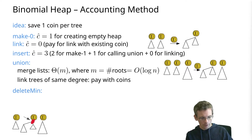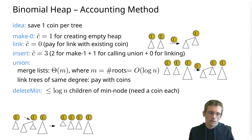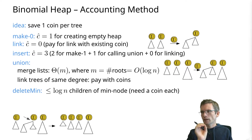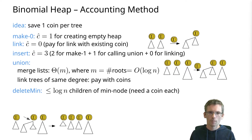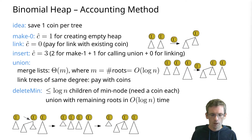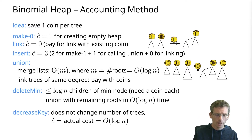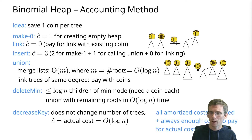For delete-min: we delete a node, leaving the original list and the list of children of that node, which we then merge and call union. The issue is that the children of the minimum don't have coins yet, so we must give each of them a coin — but there are at most O(log n) children, so we spend at most O(log n) for that. Then it is essentially the same as union, which was O(log n). So overall delete-min needs O(log n) coins and has amortized cost O(log n). This concludes the amortized analysis using the accounting method.